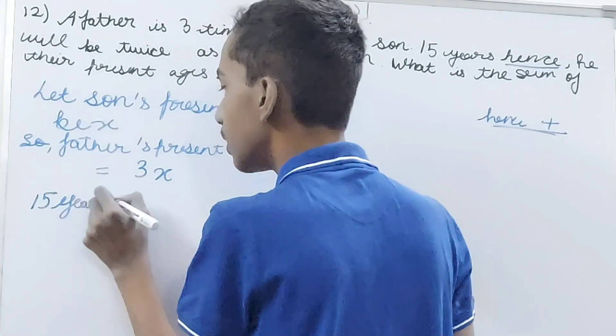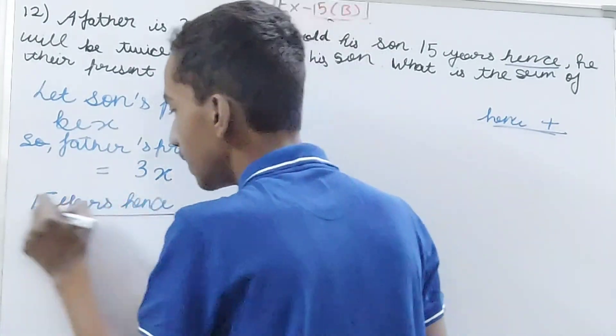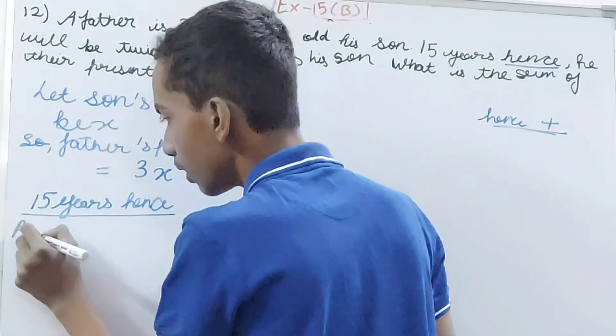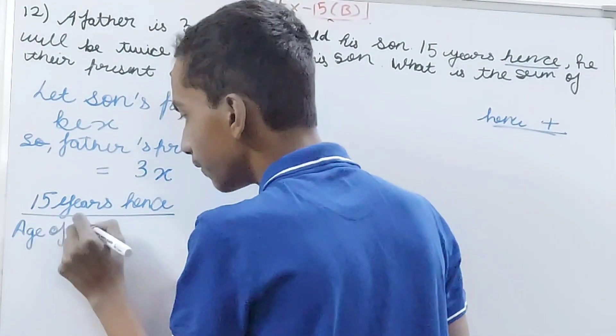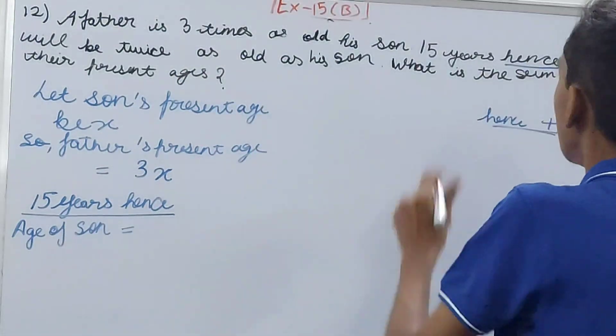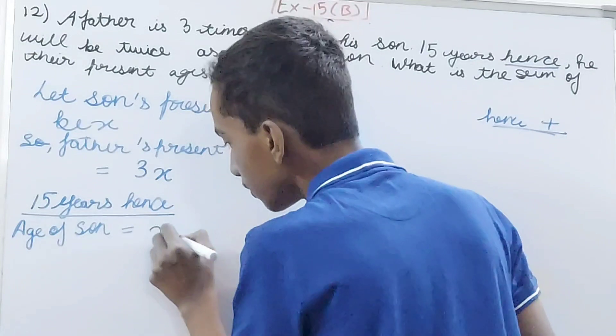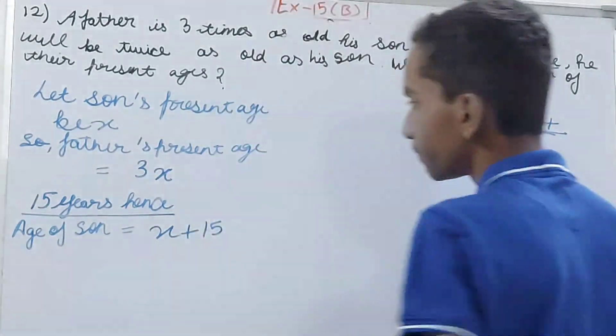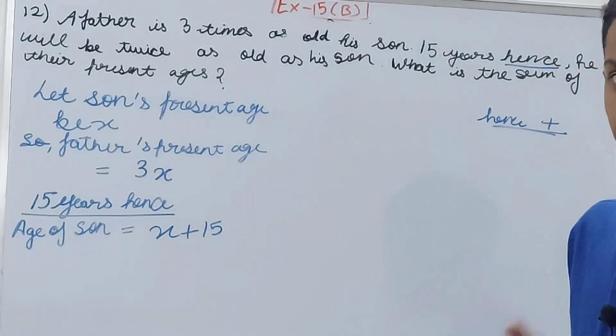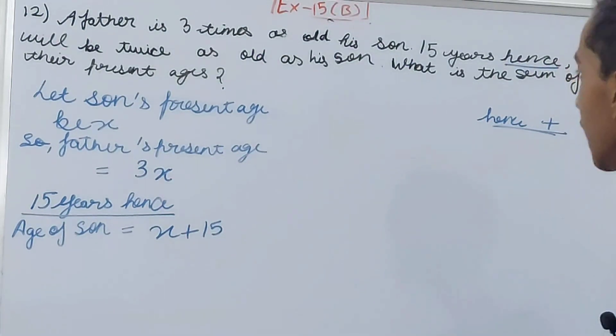15 years hence, what will be the age of son? 15 years further, this will be x + 15, because x is present age, 15 years in the future, so plus 15.